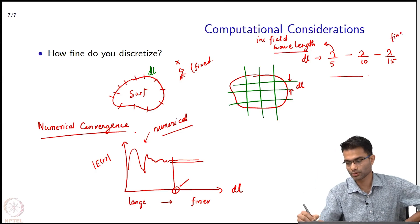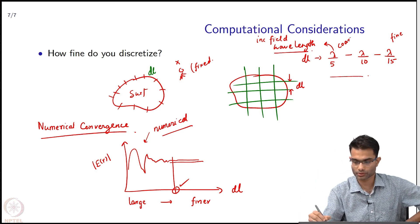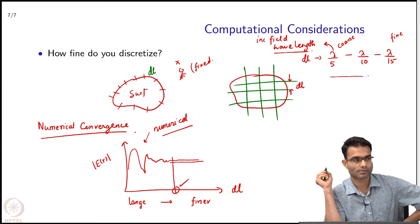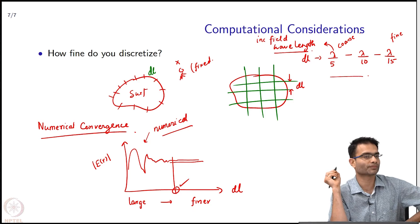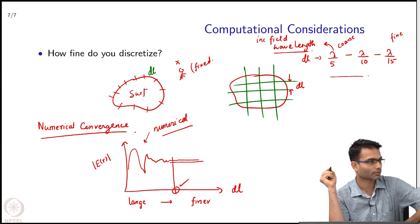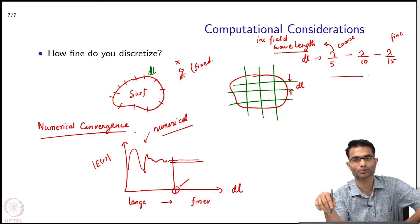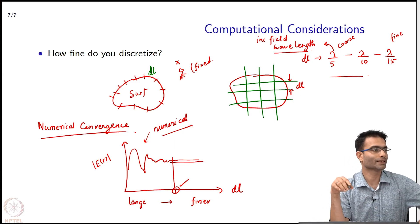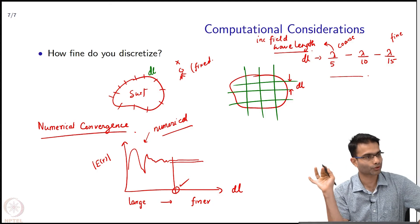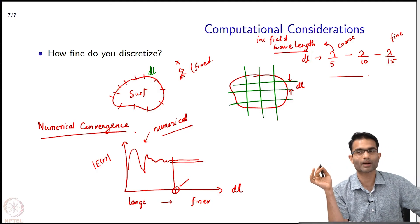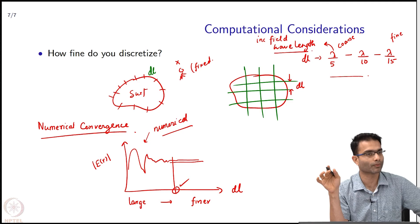So this is fine and this is coarse. But you just use this as a rule of thumb, it may be wrong also for your problem, you should check. This is just to tell you to not start from DL equal to 2 lambda or some ridiculously large number like that. That is for sure not going to work and choosing lambda by 100 for sure is an overkill.